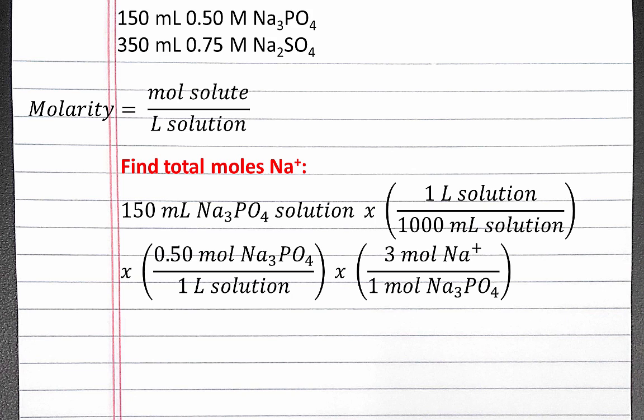When we multiply and divide these numbers out, we'll get 0.225 moles of sodium ions. These are the moles of sodium ions from just the sodium phosphate solution.